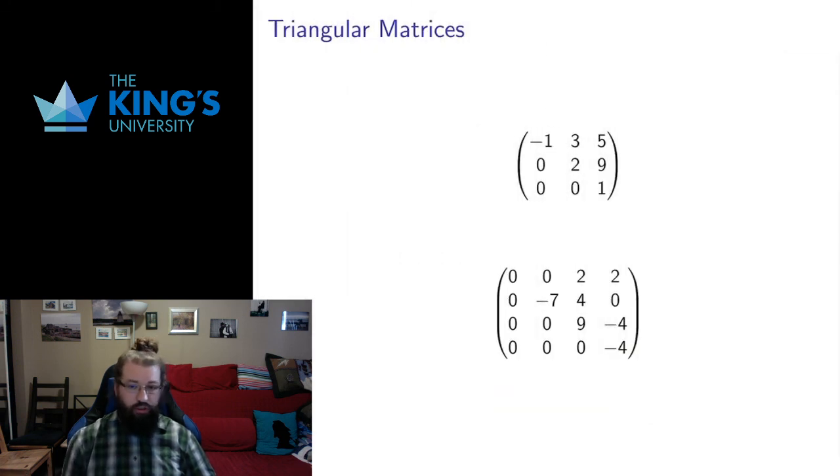Just before I finish this video, I want to give a short definition that will be useful in this week. A triangular matrix is a matrix where everything either above or below the diagonal is zero. So here, if I look at the diagonal here, in this case, everything below the diagonal is zero. This is called an upper triangular matrix.